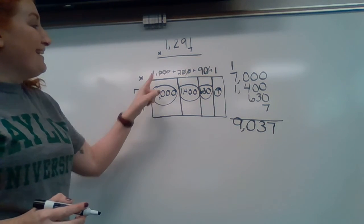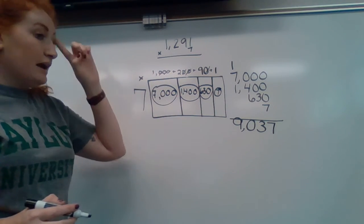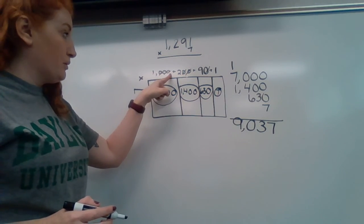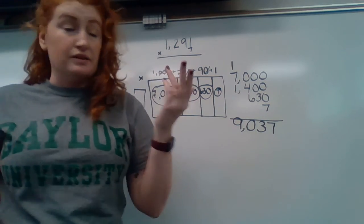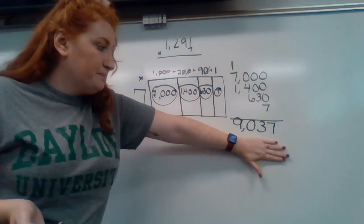And then go slowly and think, what is the product of the number on top and the number on the side, and just keep going. Then final step, add them all together. And there's your product.